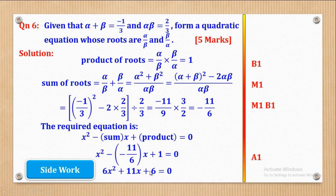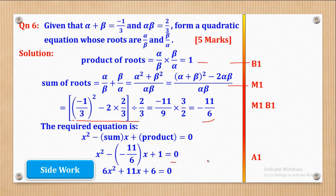So 6x² + 11x + 6 = 0 is the equation which was required. For the marking: the bonus mark is for getting the product of roots; the method mark is for expressing the sum of roots in the correct form; M1 is for substituting; B1 is for getting the sum; and A1 is at the final answer. Whether you simplify fully or stop at the earlier form, you still get that A1 — but it's advisable to simplify.